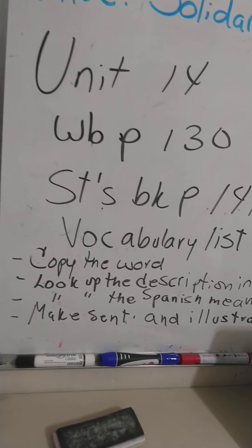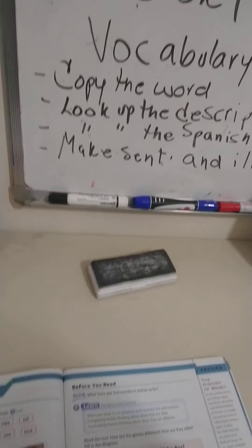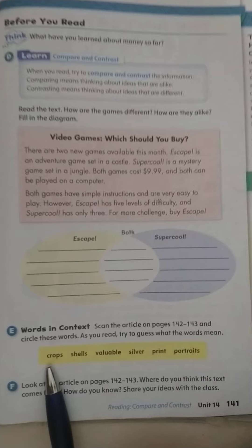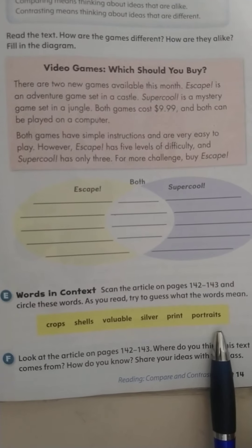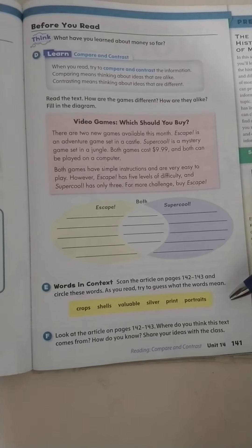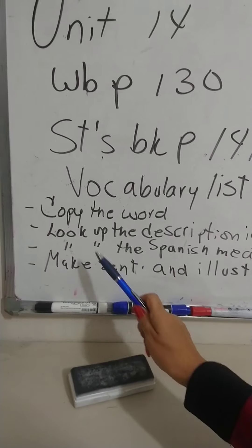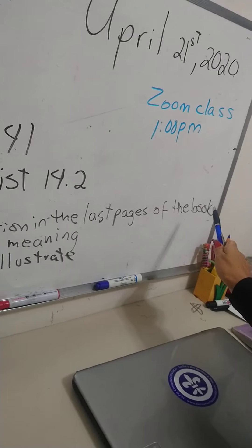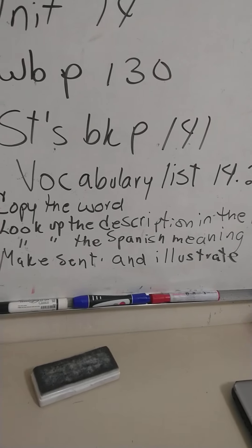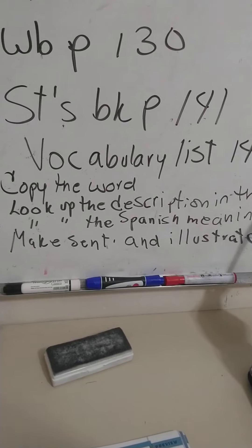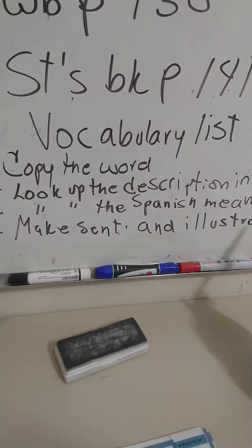Now let's go to the student's book, page 141. Here you are going to look at these words: search, crops, shells, valuable, silver, print, and portraits. You have to make vocabulary list 14.2. As always, you are going to copy the word, look up the description in the last pages of the book — that's in English — then look up the Spanish meaning in a dictionary, and make a sentence and illustrate it.